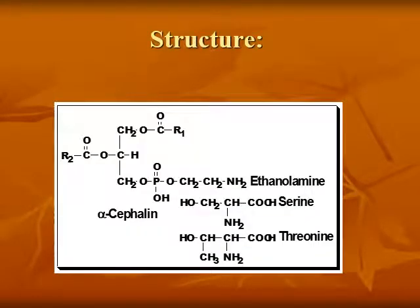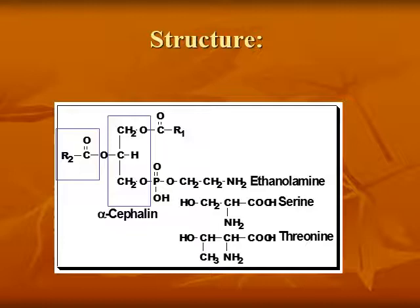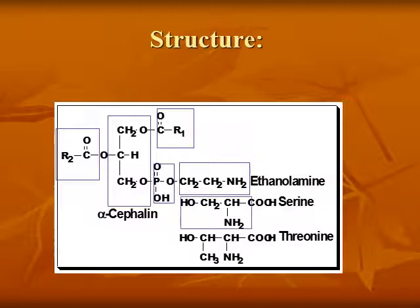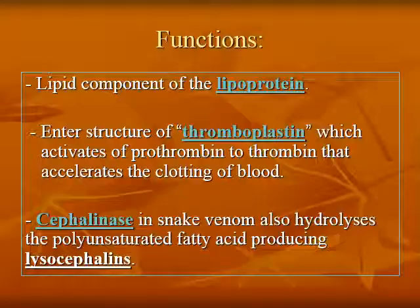Cephalin is composed of glycerol, polyunsaturated fatty acid, phosphoric acid, and one of three bases: ethanolamine, serine, or threonine. Function of cephalin: it enters the component of lipoproteins and enters the structure of thromboplastin, which activates prothrombin to thrombin, thereby accelerating the clotting of blood.